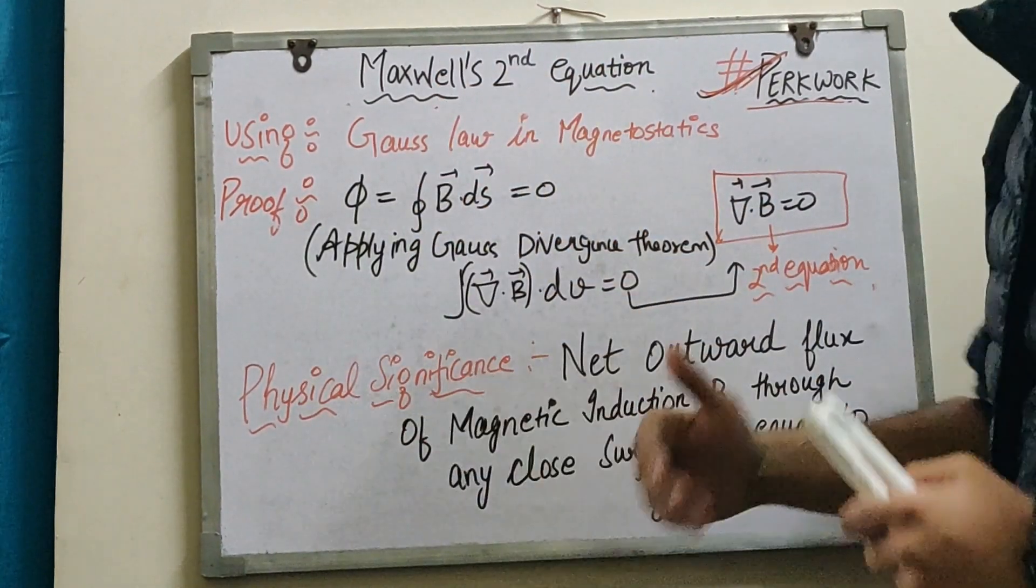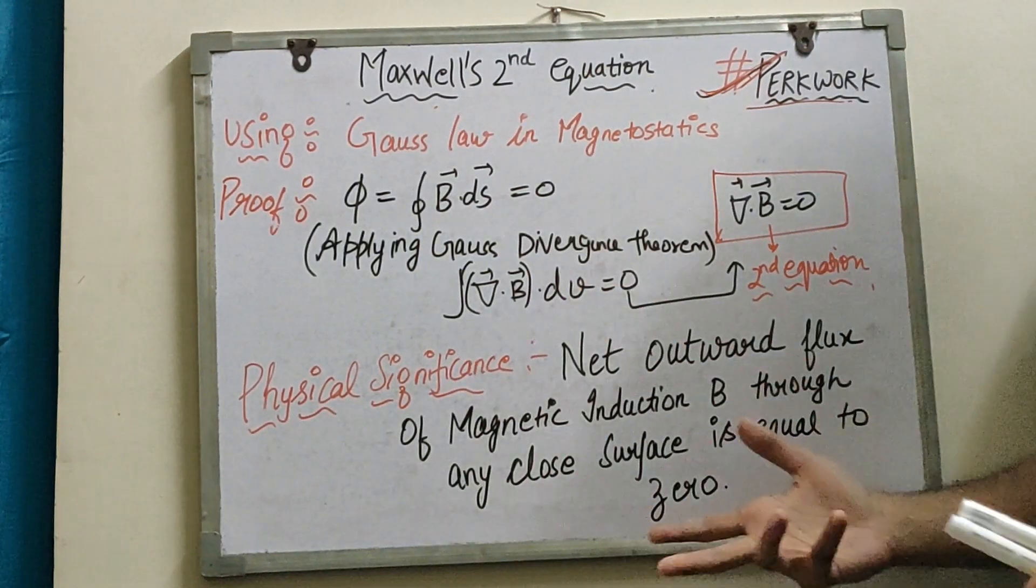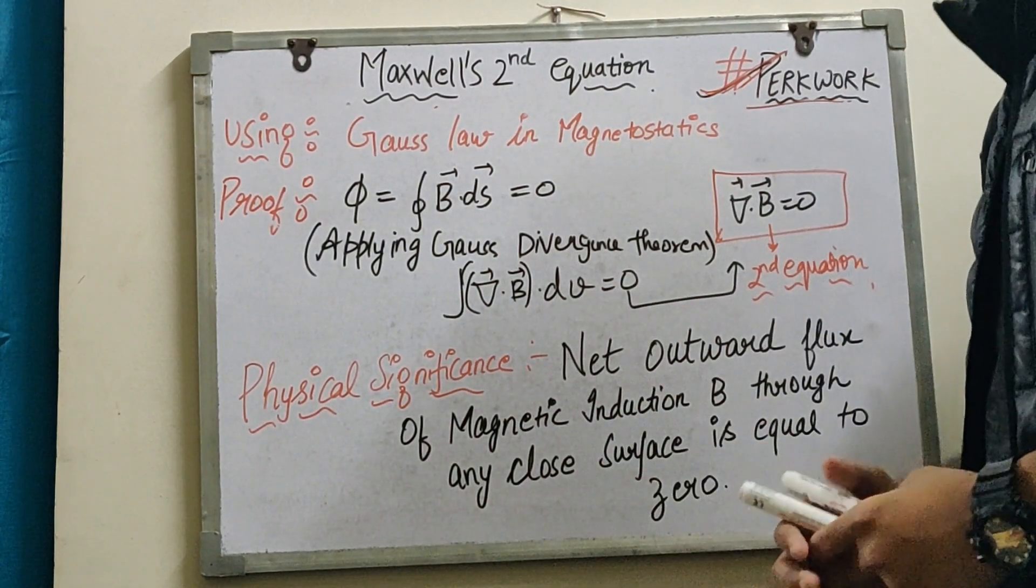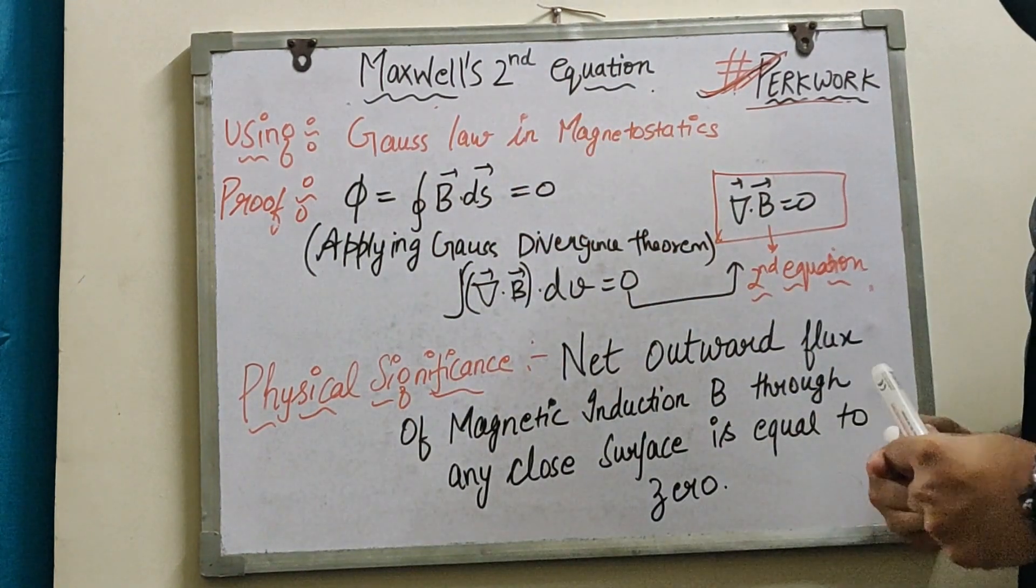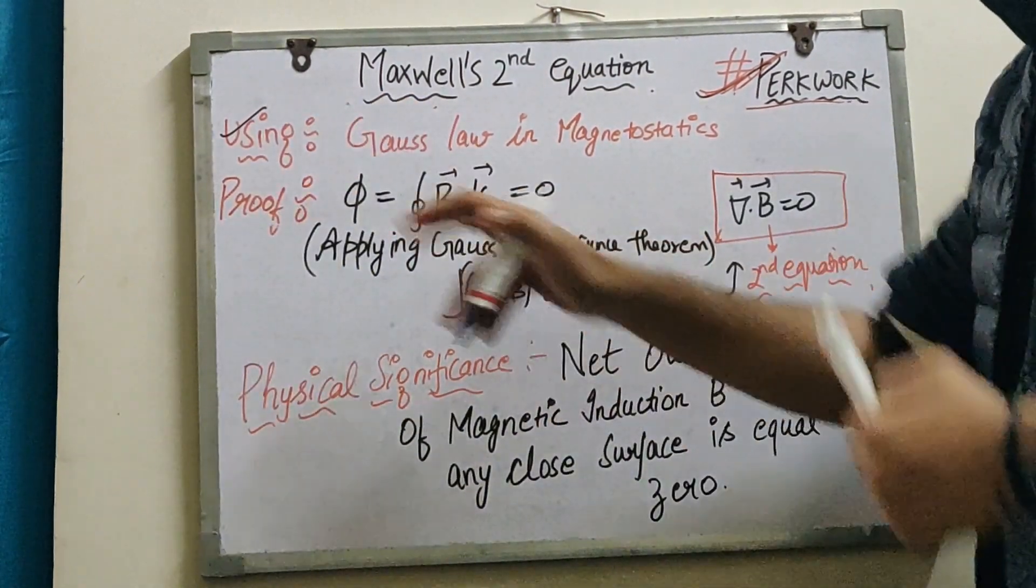If this topic appears in the exam paper, I hope we will get the whole number. So, Maxwell's second equation - first, let's see what we use. We're using Gauss's law in magnetostatics.